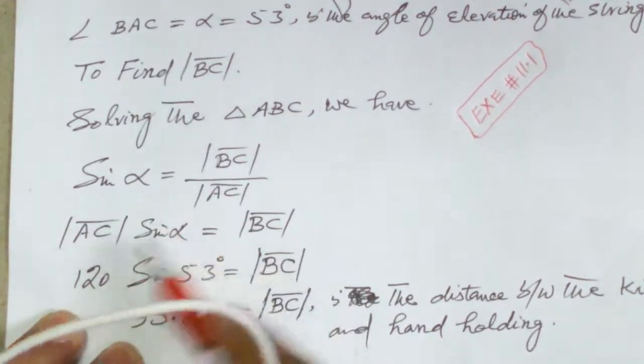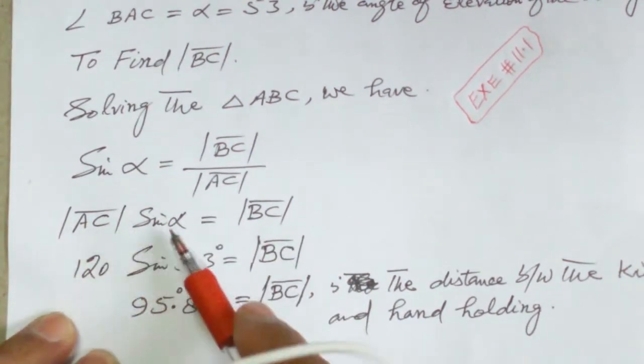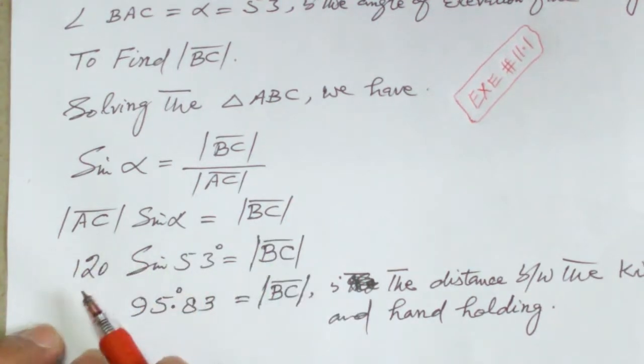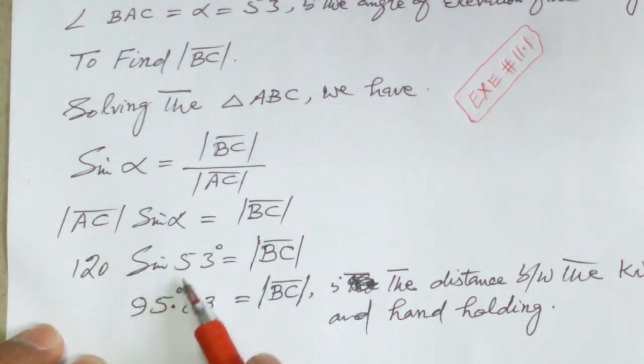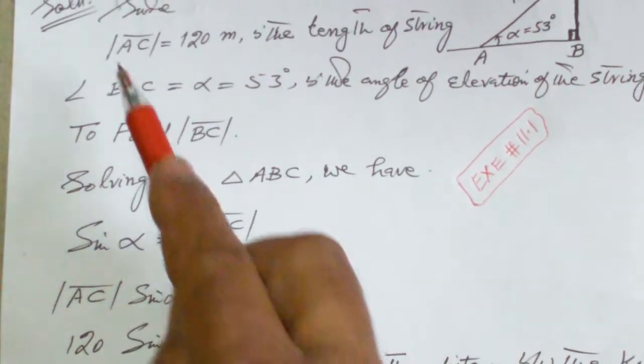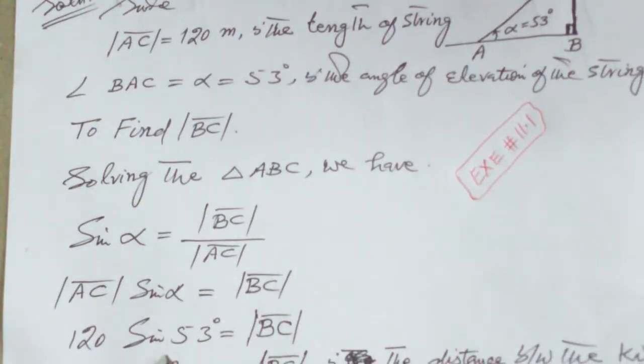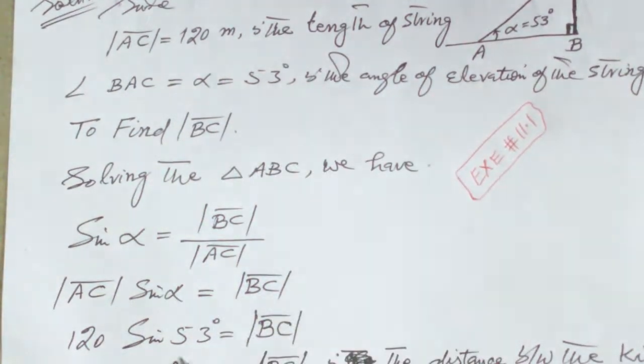Rearranging, we have AC sine alpha equals BC. AC is 120, so 120 sine of 53 degrees equals BC.